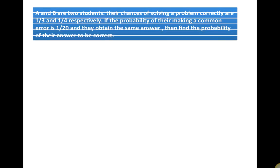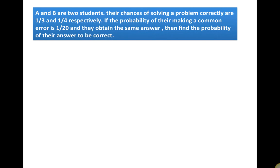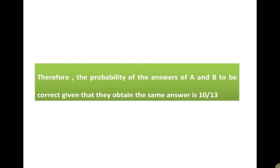Therefore, the probability of the answers of A and B being correct, given that they both obtained the same answer, is 10/13.